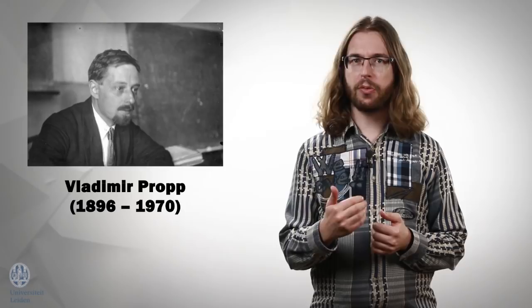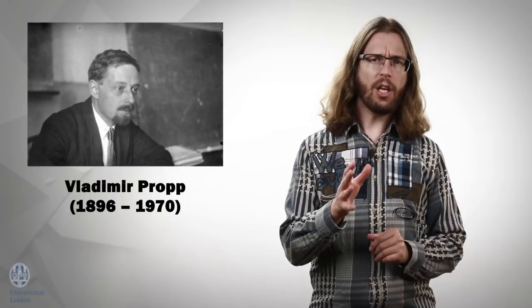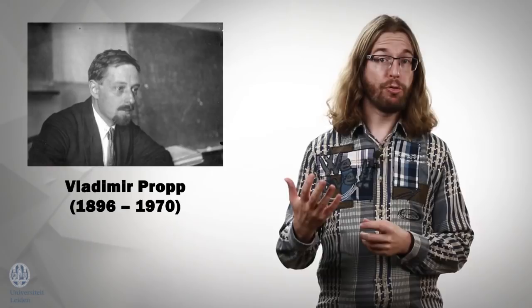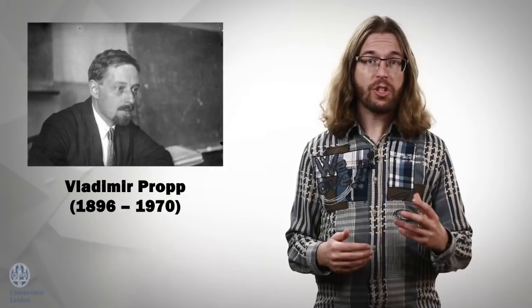We discussed several aspects of structuralism in the previous lectures, especially its thesis that a thing's identity is defined by its place in a structure. In this lecture we will look at the work of Vladimir Propp, a literary scholar who is often seen as an example of a structuralist, even though he came up with his ideas independently of Saussure.